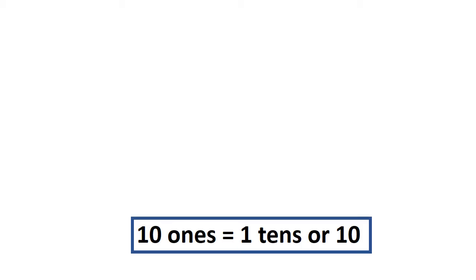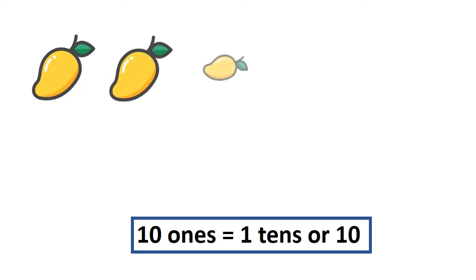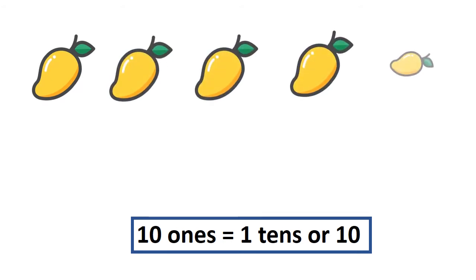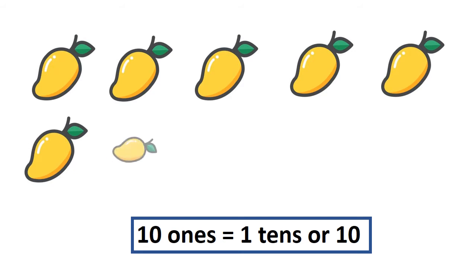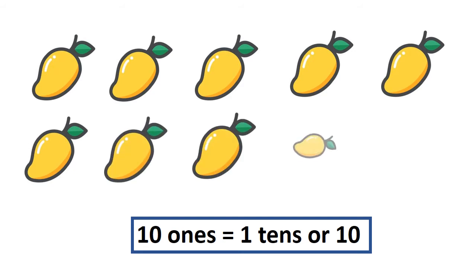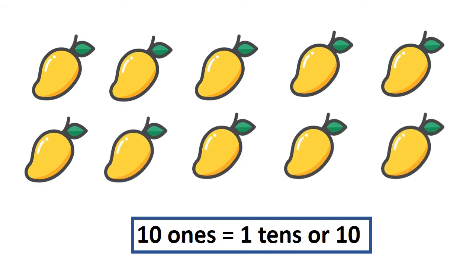1, 2, 3, 4, 5, 6, 7, 8, 9 and 10 mangoes. When we put 10 things together, it makes 1 tens.